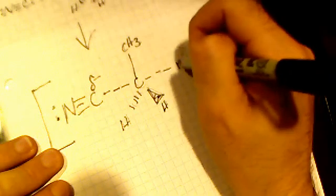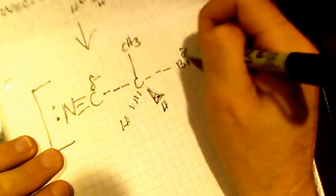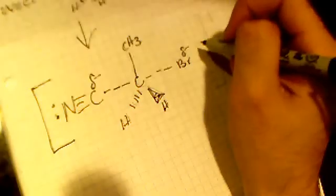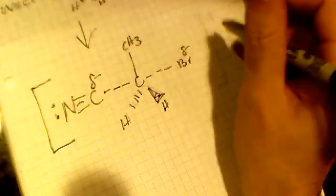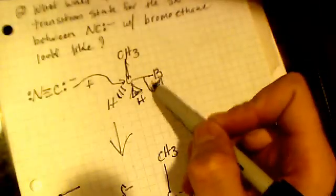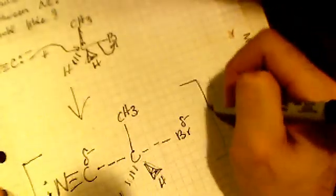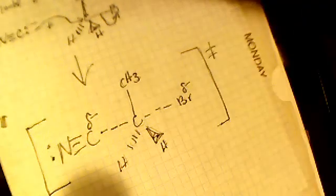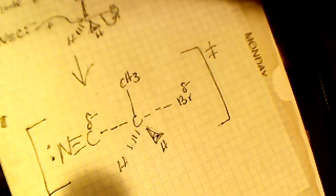And the bromine is beginning to leave and it's beginning to gain a negative charge because it's beginning to gain electrons. It's beginning to gain these two electrons to break off and become an anion. So that's the way the transition state would look for that reaction.